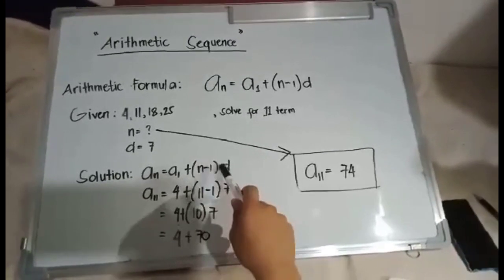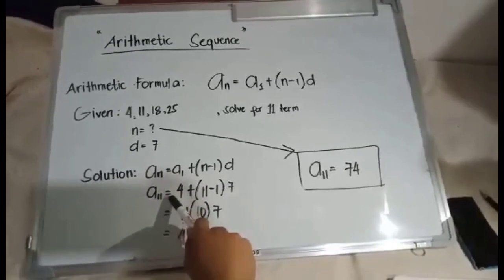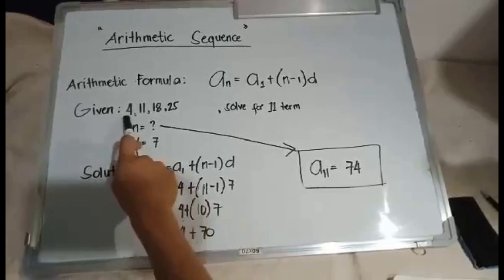So we need to substitute. Our number of terms n is 11, and our a_1 is 4, which is our first term.